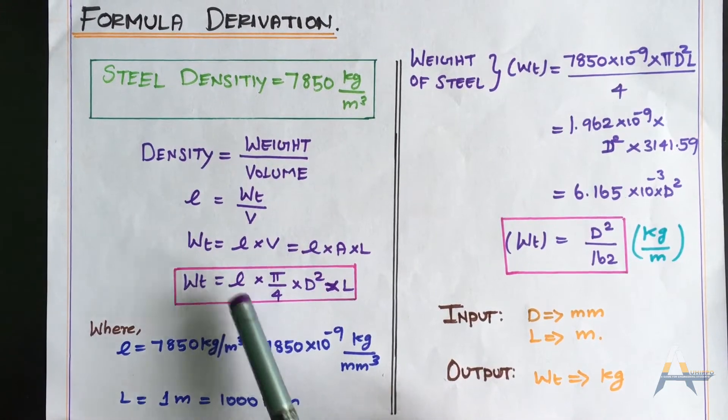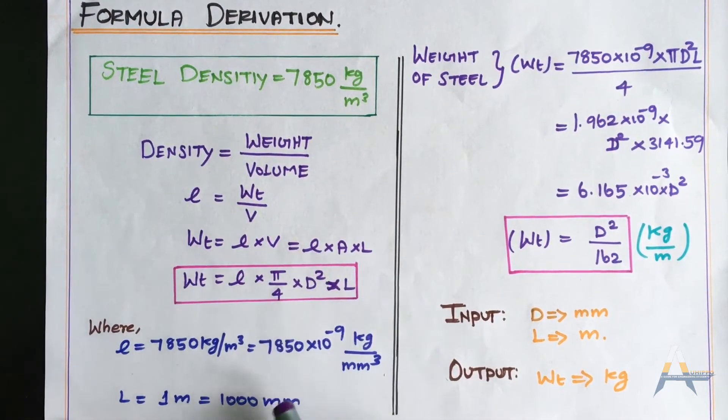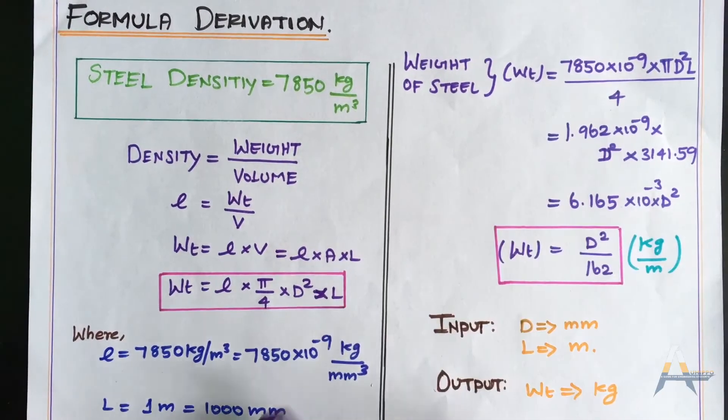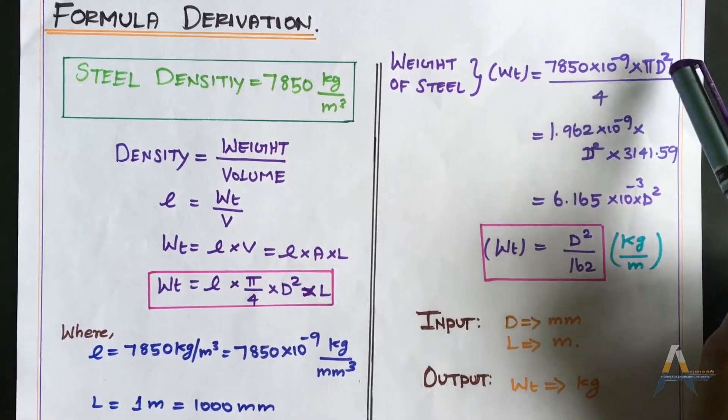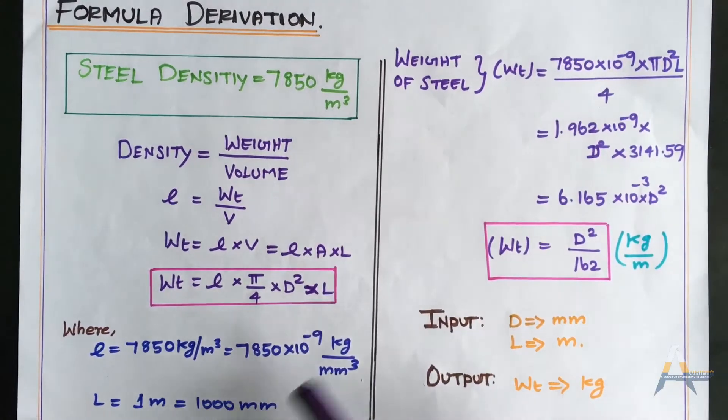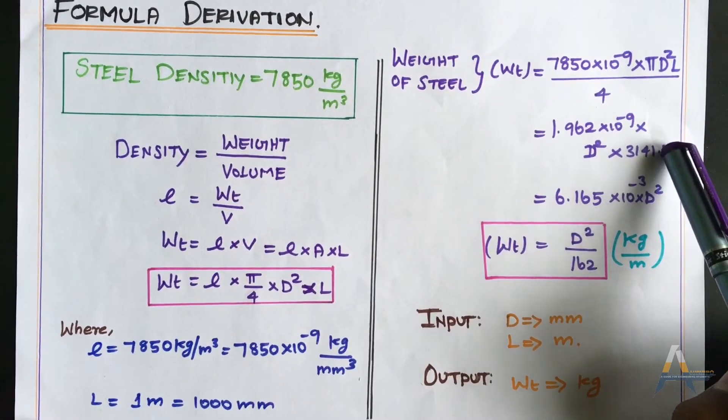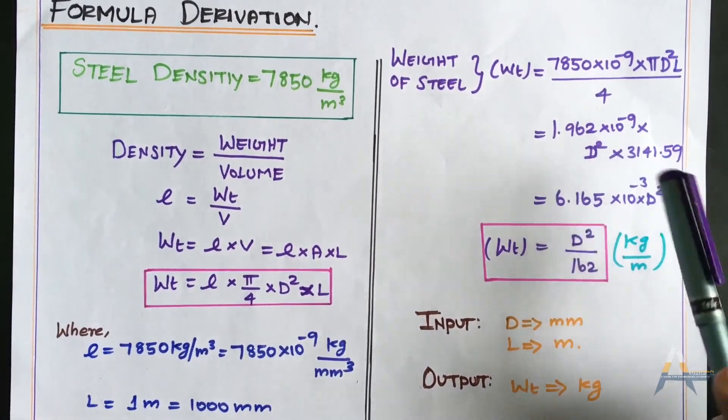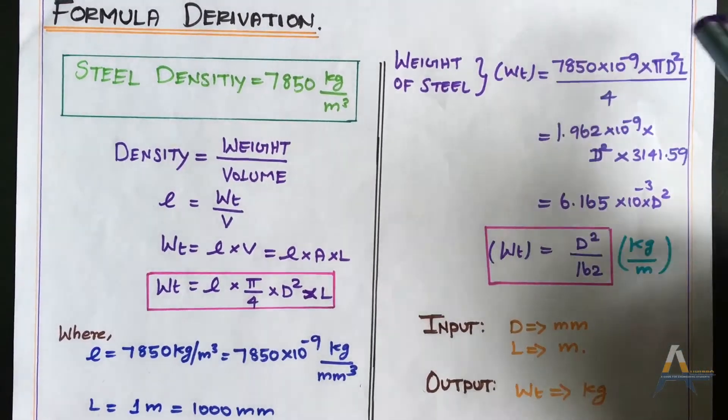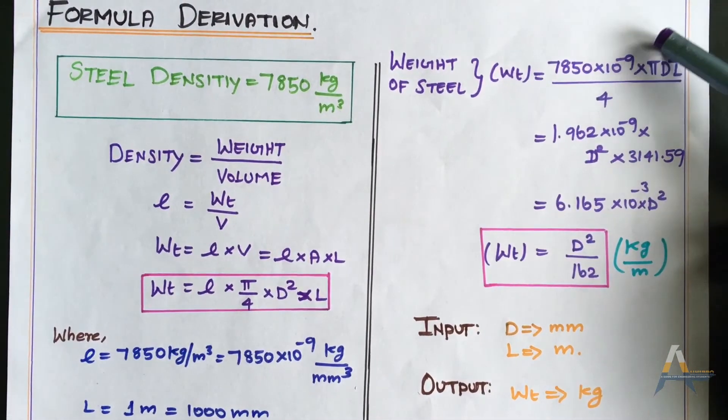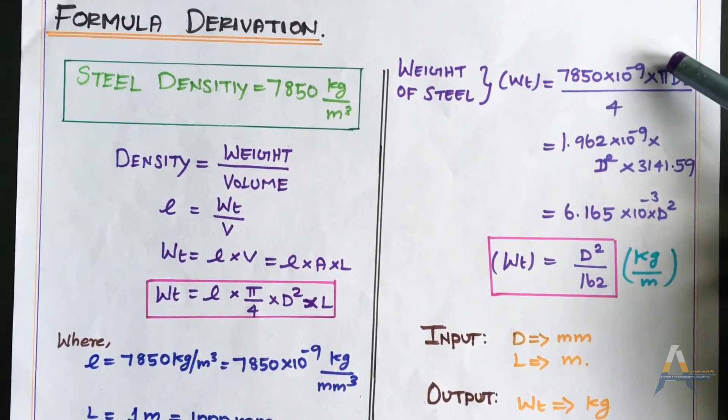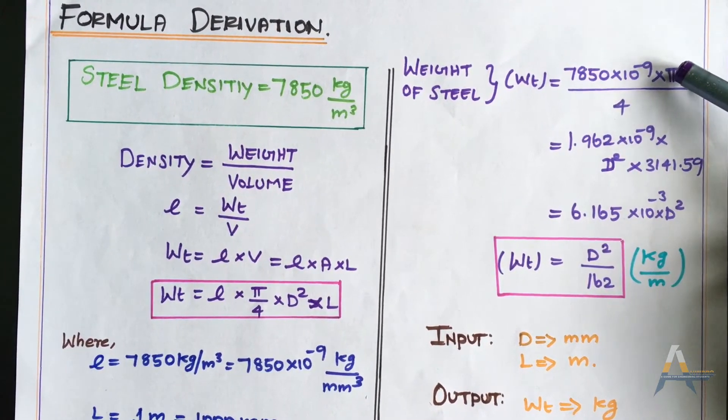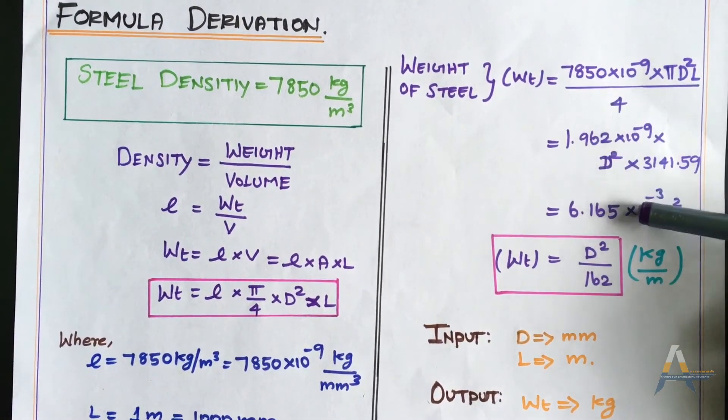Substituting the density and length values into the weight formula, we solve for the constants. With the density value, pi value, and length conversion known, we can solve all numerical terms with D².